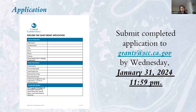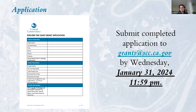Changes from previous years based on grantee feedback include having the instructions and application in separate documents, an easier format to follow, and questions more specific to better understand your projects. For the budget section, there is a table that applicants will need to fill out. We've offered two different options for how to fill out that table. Similar to last year, we're offering a Google Docs version of the application that can be converted to a Word document for submission.